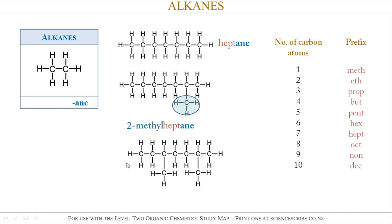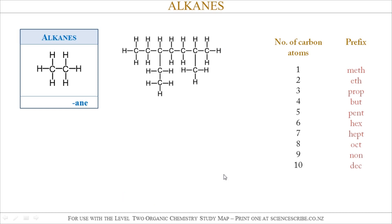In this other example, I still have seven carbon atoms as my longest chain, so that makes it HEPT. It's still an alkane, so Heptane. This time I've got two Methyl groups, so it's Dimethyl. If I had three, it would be Tri; if I had four, it would be Tetra. I've got two, so it's Dimethyl, and they are at positions 2 and 5.